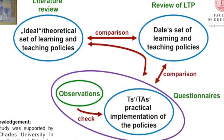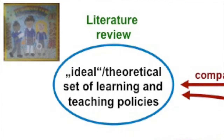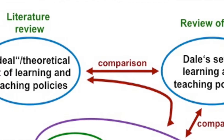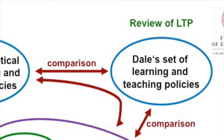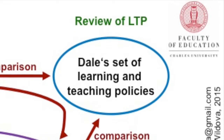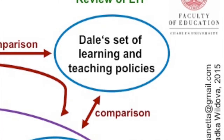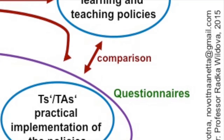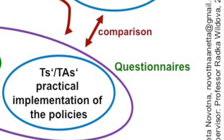A literature review of an ideal set of learning and teaching policies for EAL pupils was put together and then compared with the existing set of learning and teaching policies for EAL pupils. The objective was to find out how and to what extent learning and teaching policies for pupils with English as an additional language are implemented in Key Stage 1 and Key Stage 2 by teaching assistants and teachers.